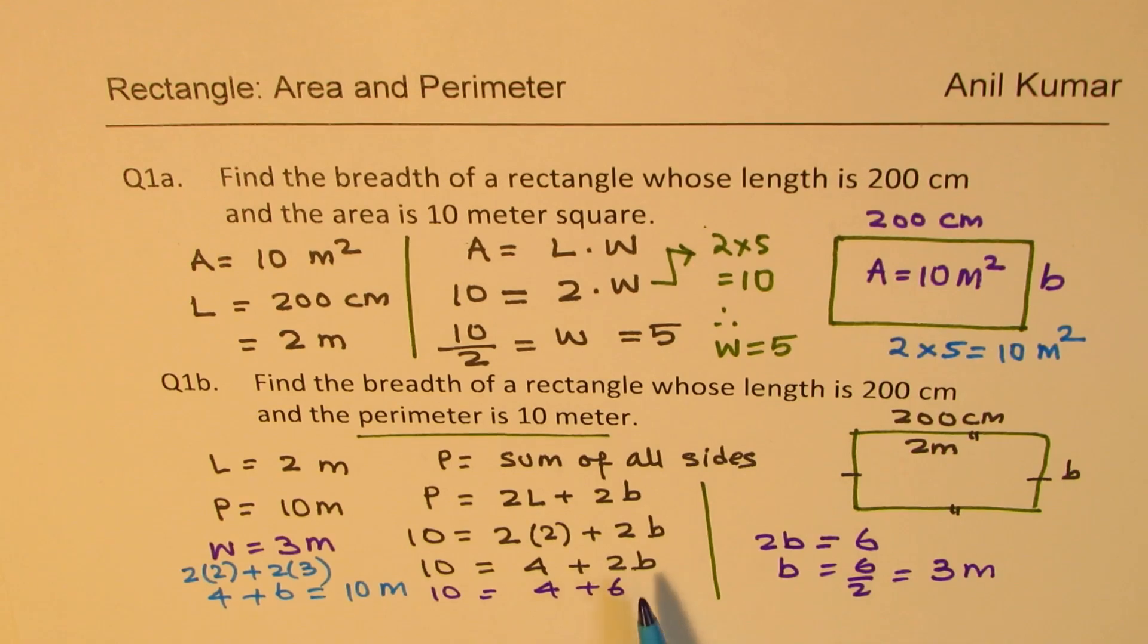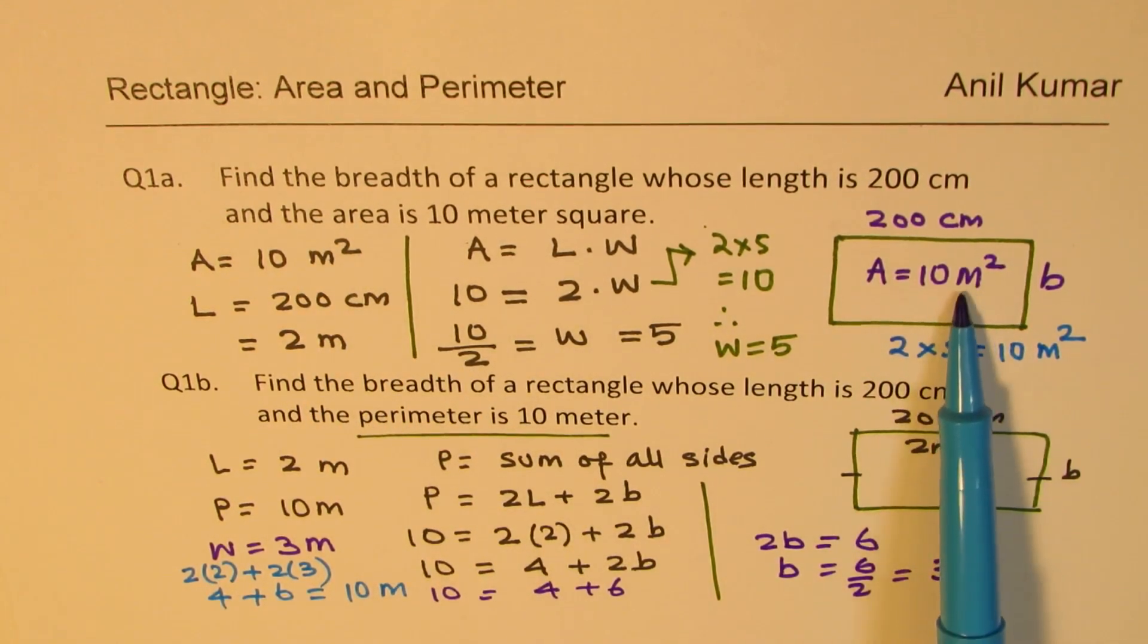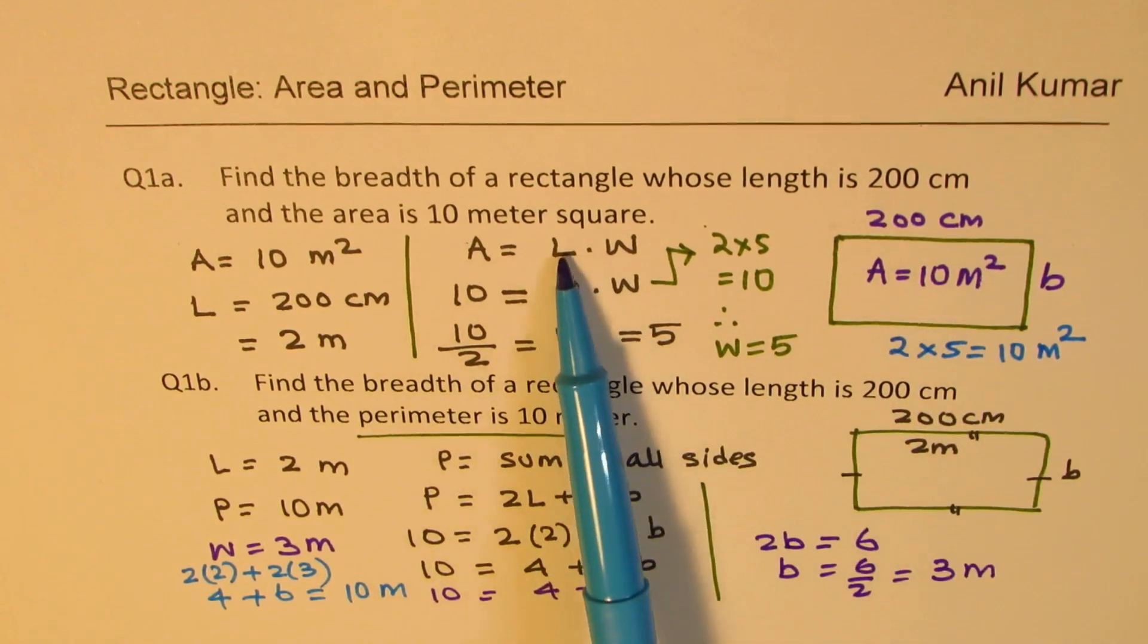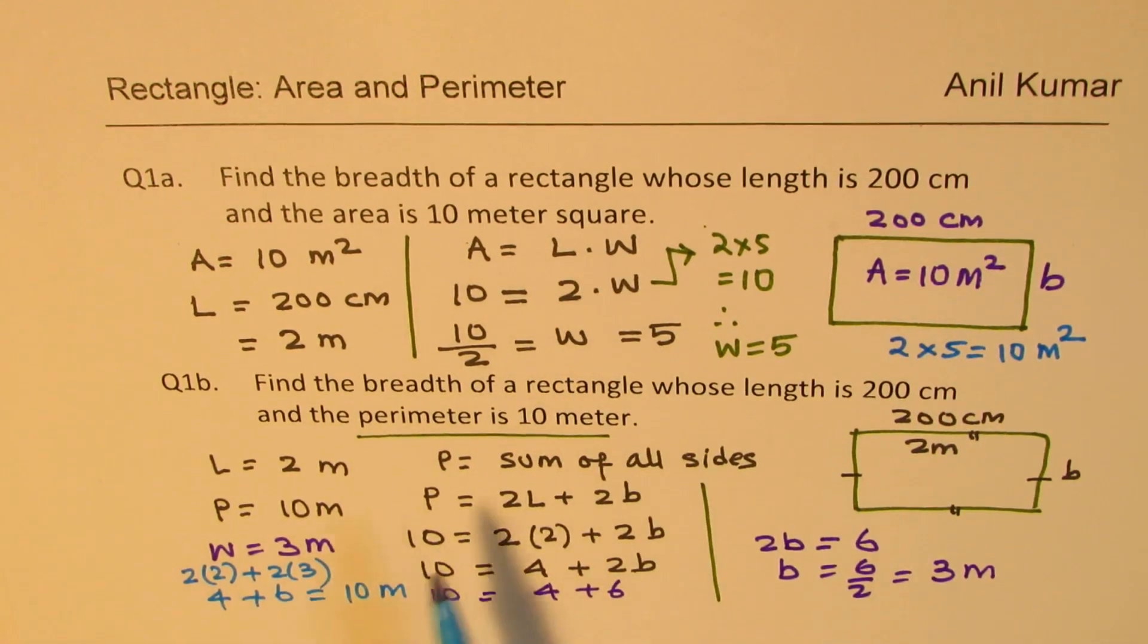Also note here: when we talk about area, we are saying units are meters squared since we are multiplying. In case of perimeter, we are talking about meters as the unit since we are just adding two lengths. I hope that concept is absolutely clear. Feel free to write your comment, share your views, and if you like and subscribe to my videos, that would be great. Thanks for watching and all the best.